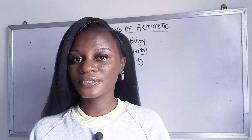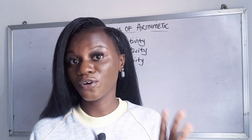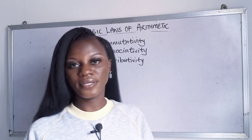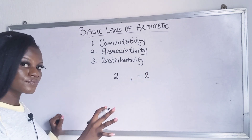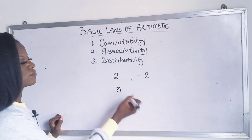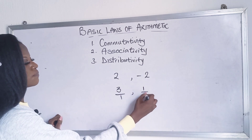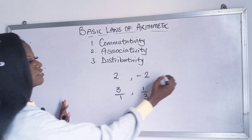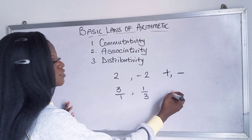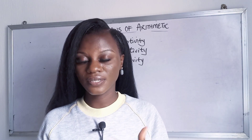We know that subtraction is the inverse — the reverse of addition — while division is the reverse of multiplication. The reverse of 2 is minus 2. And 3 over 1, the reverse is 1 over 3. So the reverse of addition is subtraction and the reverse of multiplication is division. What are the basic laws that arithmetic obeys?